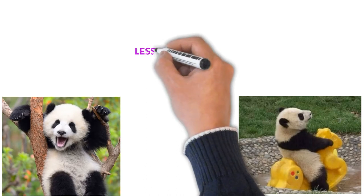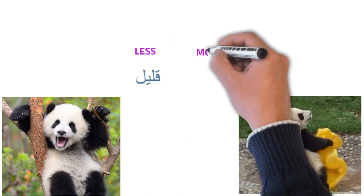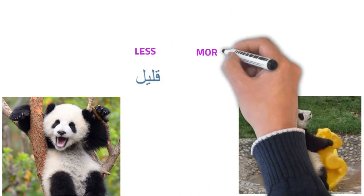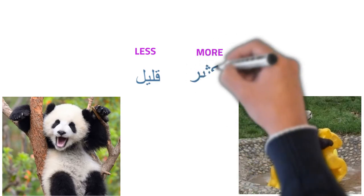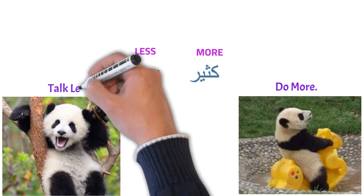The Arabic word for less is kalil. Kalil. And the Arabic word for more is kasir. Kasir.